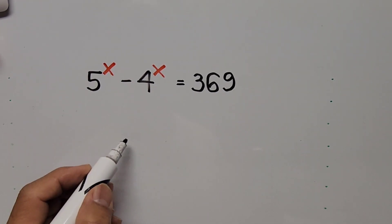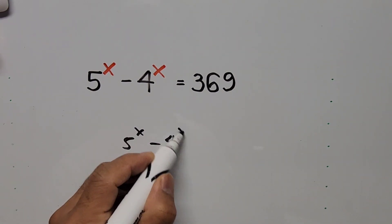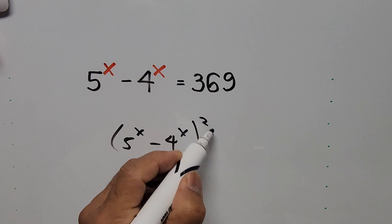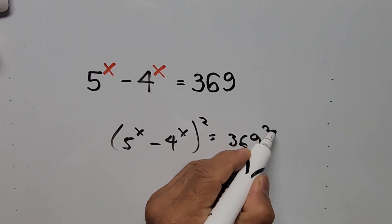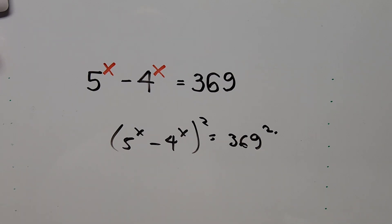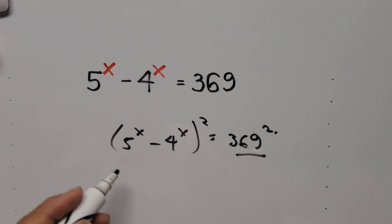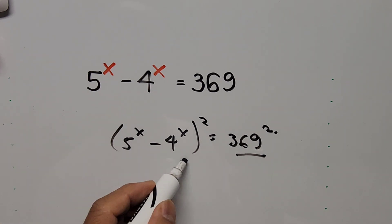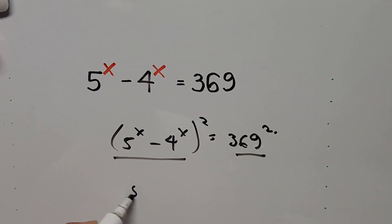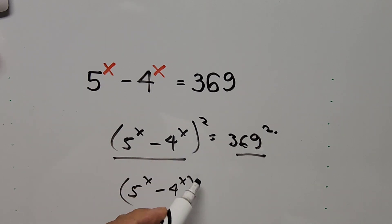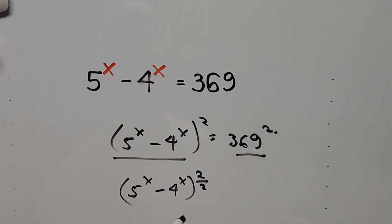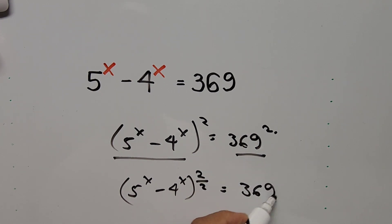On the left hand side we have 5 to the power of x minus 4 to the power of x. If we square this we must square the right hand side as well. So what if we consider squaring just the left hand side — 5 to the power of x minus 4 to the power of x — and then divide the exponent by 2, writing it as exponent 2 over 2, so there's no need to square the right hand side.